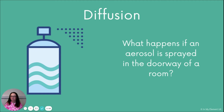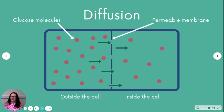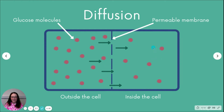Whether it be an air freshener or a deodorant, those particles are moving by the process known as diffusion. Diffusion also occurs in cells. We've got this diagram here — you need to be really clear on it because you're going to have to explain this process. You've got a permeable membrane, which is the cell membrane. This part here is the inside of the cell, and here is the outside of the cell.